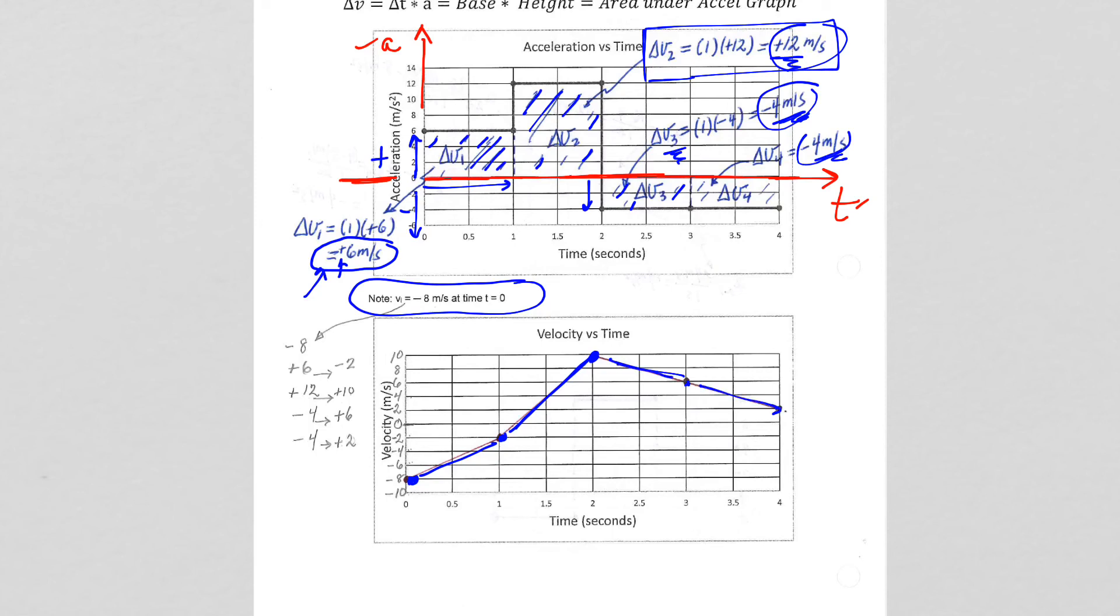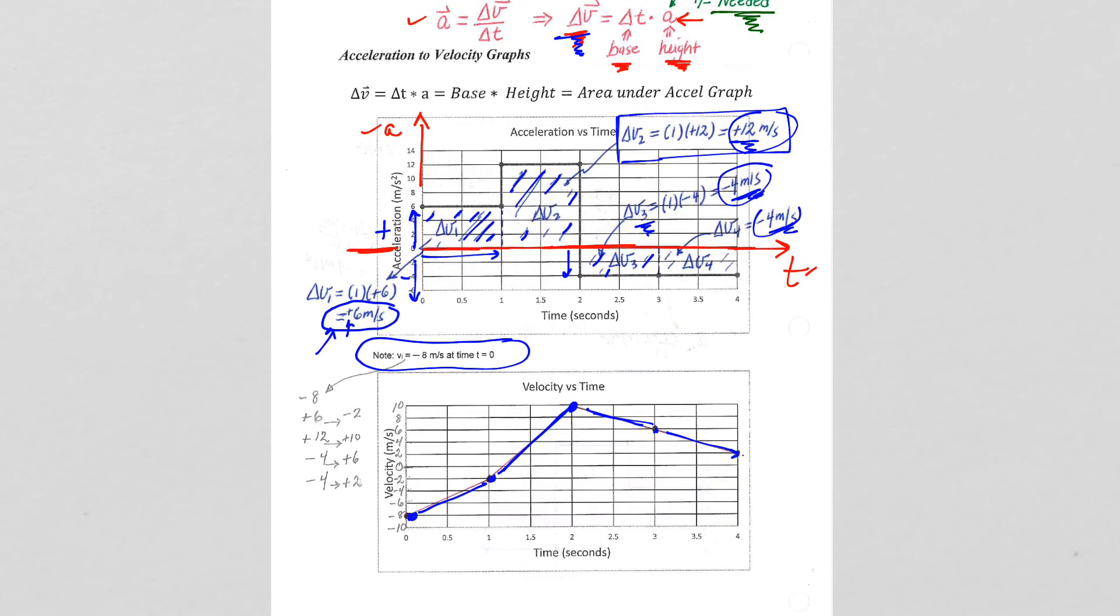That was pretty straightforward, pretty standard when we're going from an acceleration to a velocity graph. We are going to work with area, the delta Vs. When you recall,